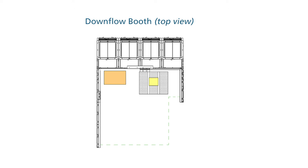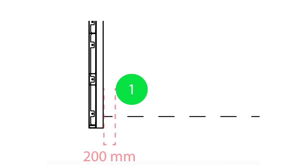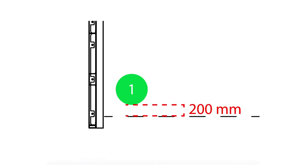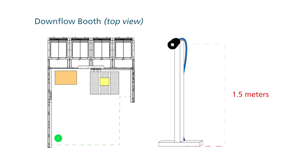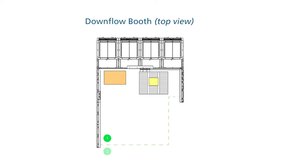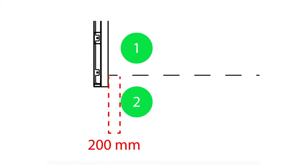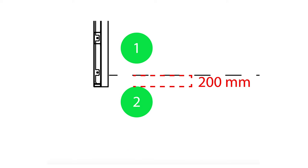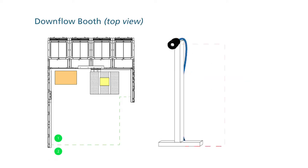Position the sampling points accordingly. Sampling point 1 is 200 mm from the left wall of the booth, approximately 200 mm inside the safe line at a height of 1.5 meters. Sampling point 2 is 200 mm from the left wall of the booth, approximately 200 mm outside the safe line at a height of 1.5 meters.